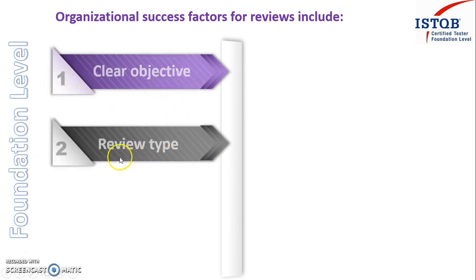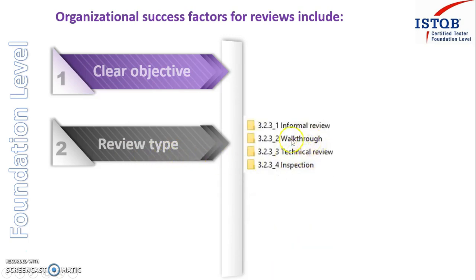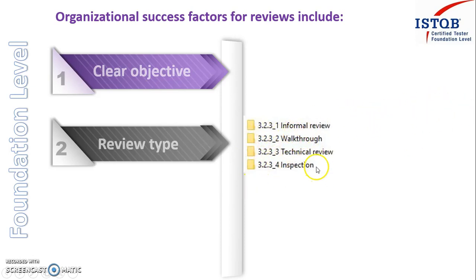The second point is review type. We have already seen the different types of review. Depending upon the organization, the project, and the software being developed, they have to see whether an informal review technique is good, or a walkthrough, technical review, or an inspection. If your feature is very critical and you go for an informal review, the review will be unsuccessful. Depending on the type of product, you have to select the review type very carefully. Selecting inspection for a normal software involves lots of people and money and can also result in an unsuccessful review process.